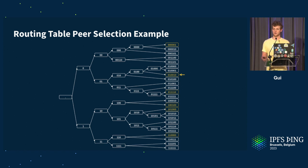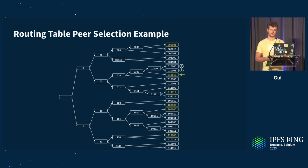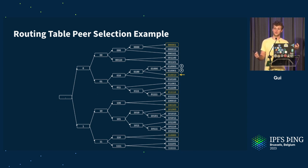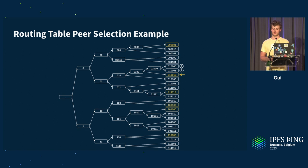With a bucket size of two, we need to store at most two peers per bucket. We have exactly two peers matching the four-bit prefix 0100, so we take them and add them to bucket four. Moving to bucket three, there is only one peer matching the three-bit prefix 010, so we just take it and add it.